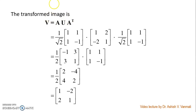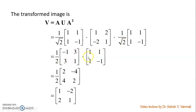If you observe carefully, the matrix A is 1 upon root 2 times [1, 1; 1, -1]. Hence A transpose is also the same. So we substitute A, U, and A transpose and multiply them. Multiplying 1 upon root 2 with 1 upon root 2 gives 1/2. Multiplying the inner matrices and then that result with the final matrix, we get the result as 1/2 times [2, -4; 4, 2].